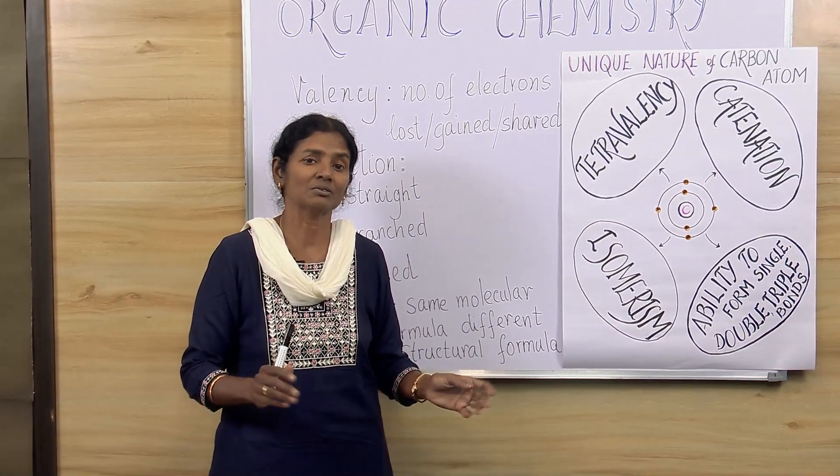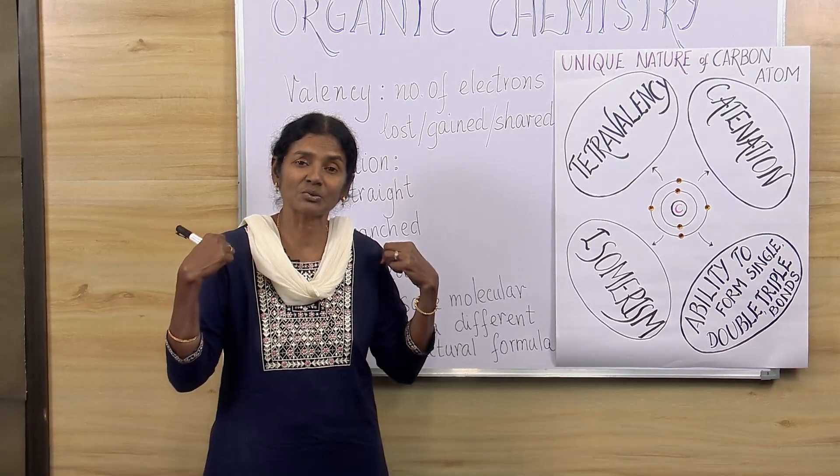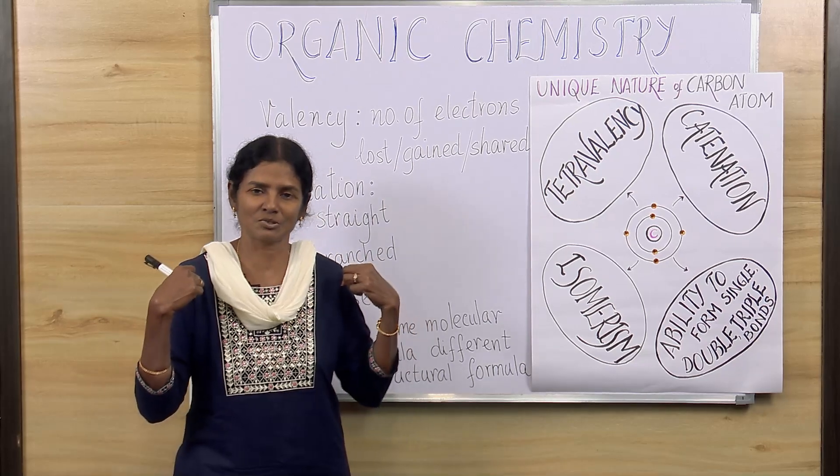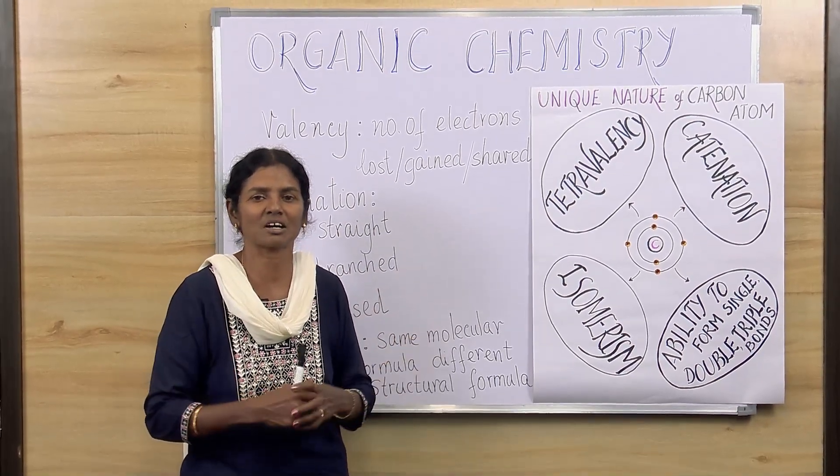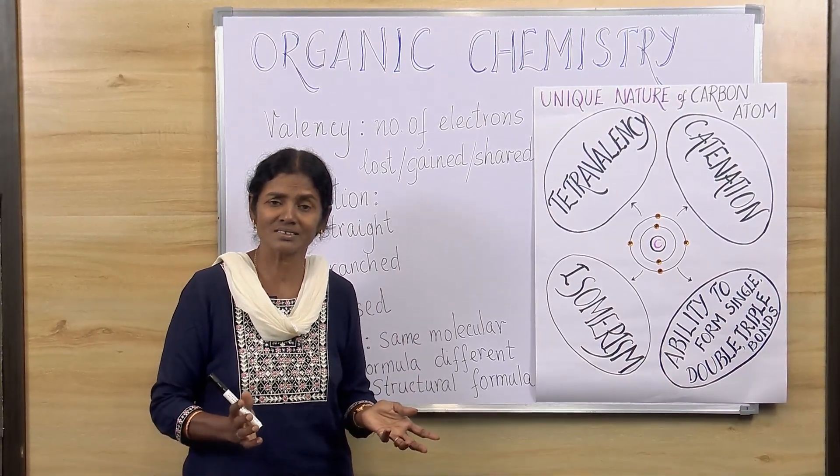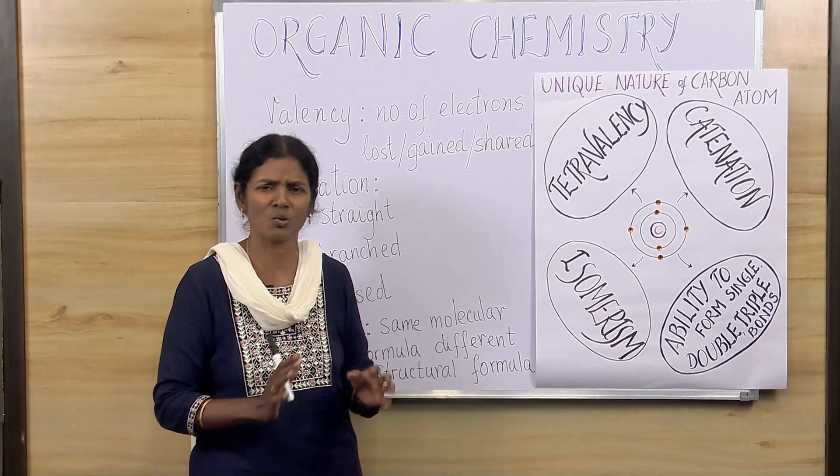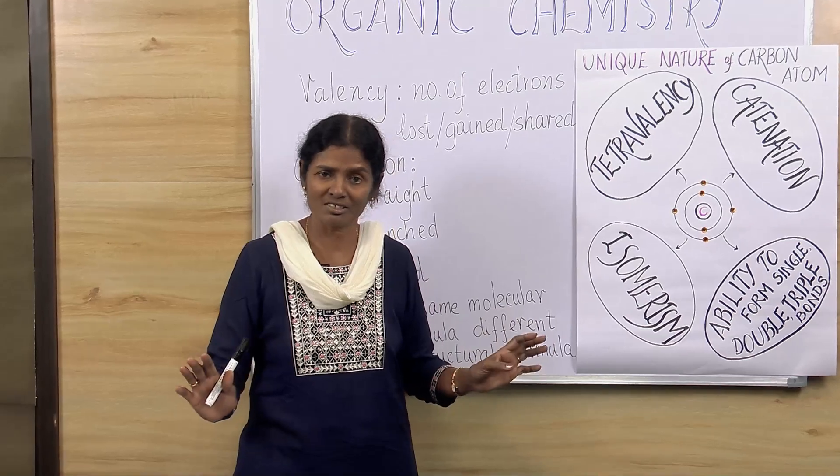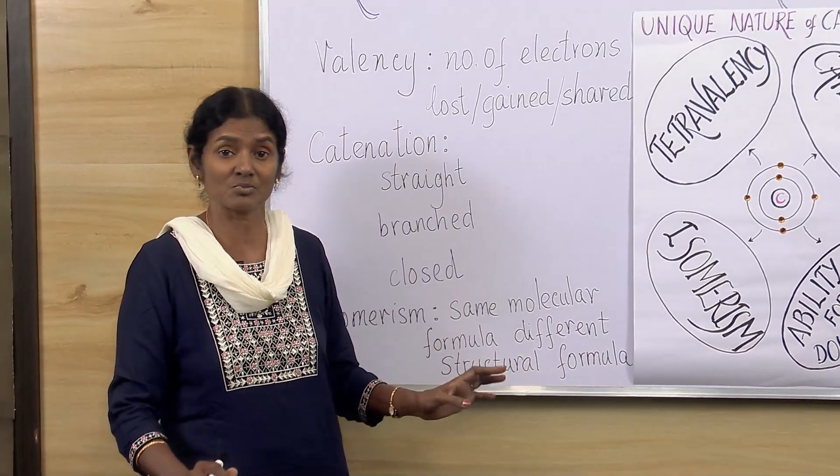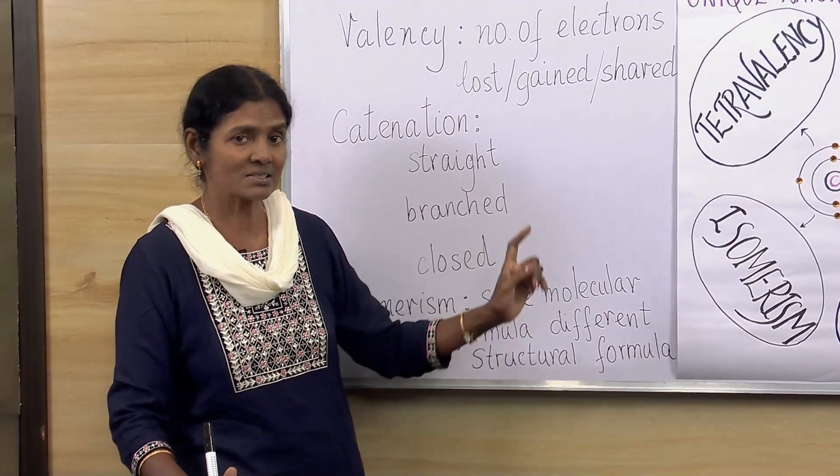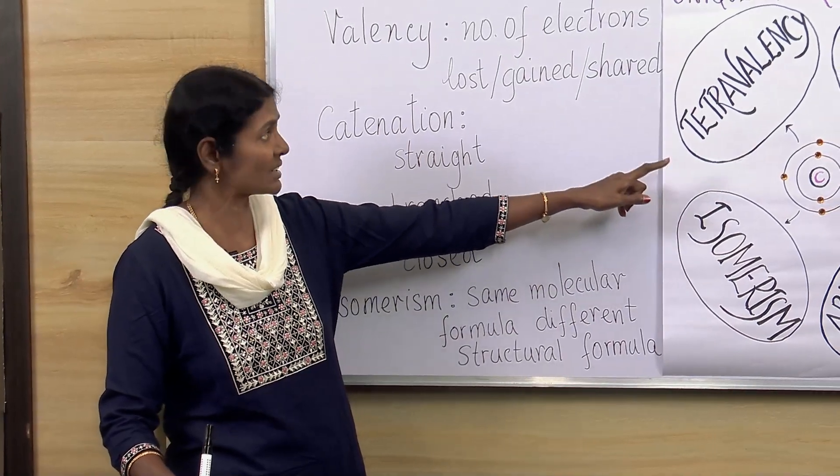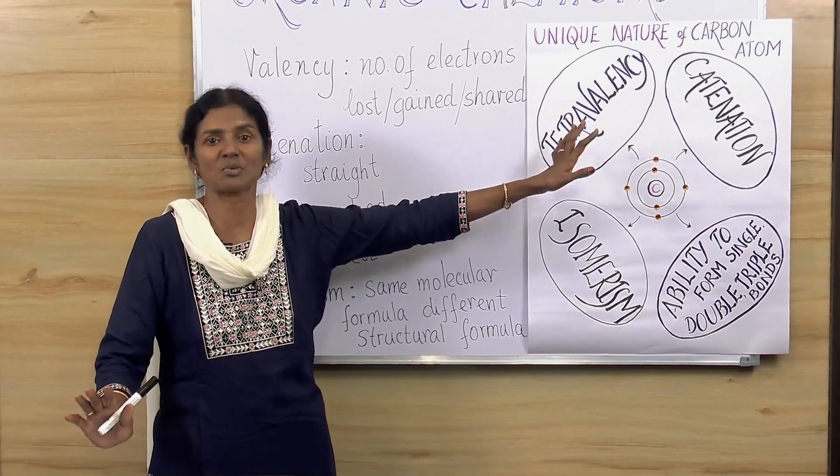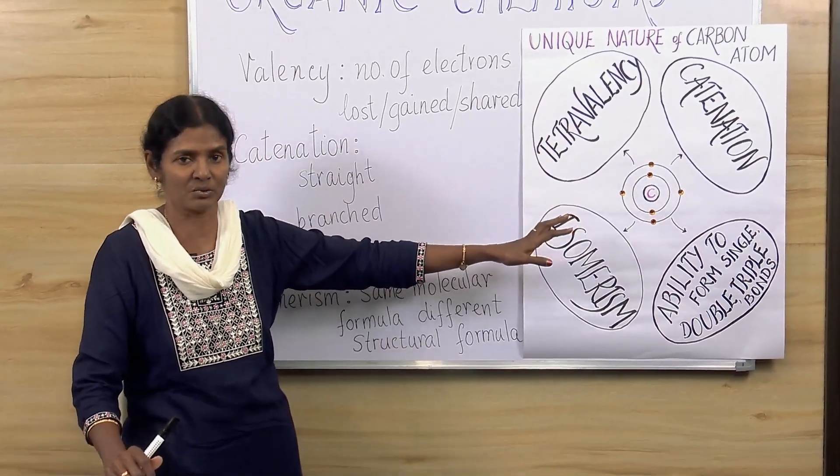Then you have the fabric that you wear is made of cotton or silk or jute, everything is made of carbon. Wherever you turn to, your bags or furniture, wooden furniture, everything is made of carbon. That is why, because there is something unique about carbon that makes it so special and it's present everywhere.